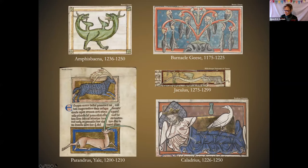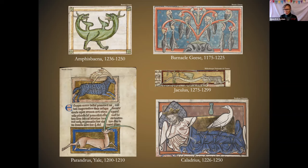Here are some more. The parandrus looks like a pretty ordinary goat or deer of some sort, but in fact it can turn practically invisible by taking on the appearance of its surroundings. And the caladrius is a bird that can tell whether a sick person will recover or die. This king may look awful, but he's one of the lucky ones — the caladrius is facing toward him, which means it will draw his disease into itself and he's going to live.